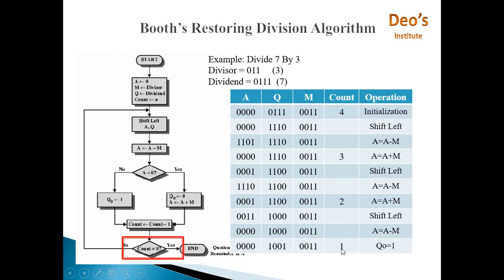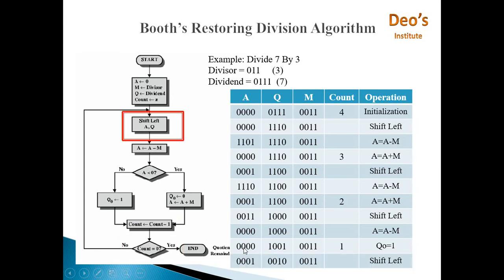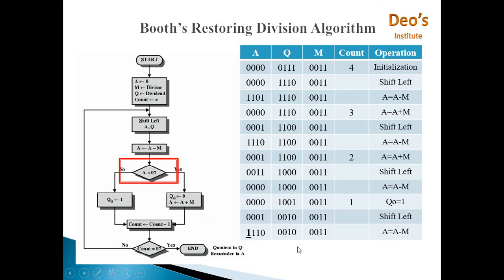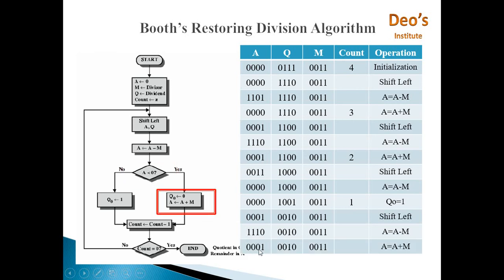Again the value of count is checked — count is not equal to 0, so shift left. This 0 will go out: 0,0,0,1,0,0,1 and a new 0 is added. Now A equals A minus M: 0,0,0,1 plus 1,1,0,1 (2's complement of M) gives 1,1,1,0. MSB is 1, so A is less than 0 — yes, restore. A will be restored to its previous value 0,0,0,1 by doing A equals A plus M, and Q0 will become 0, changing from 1 to 0. So Q becomes 0,0,1,0.